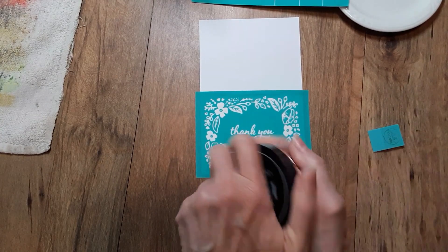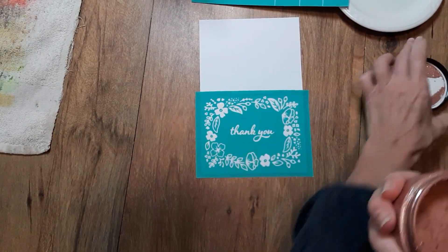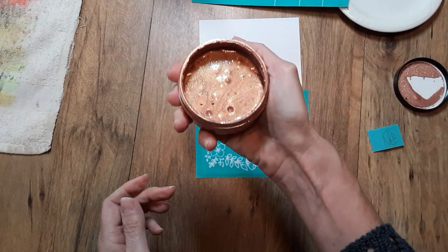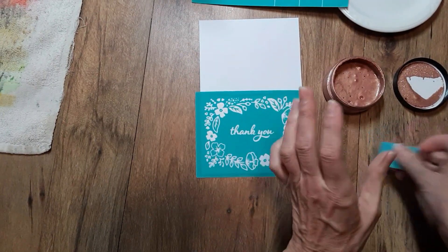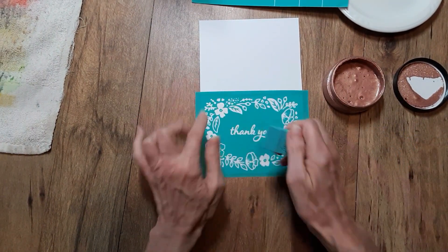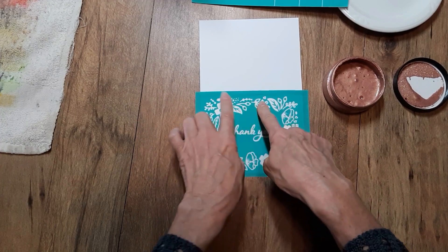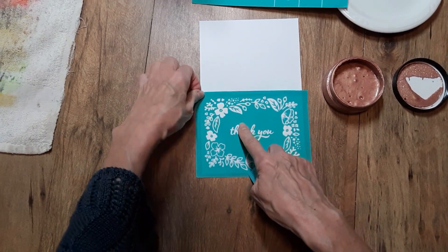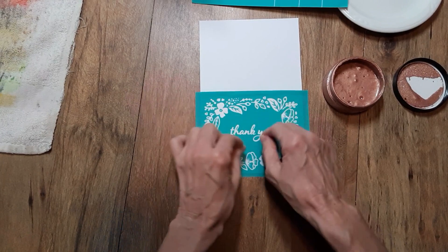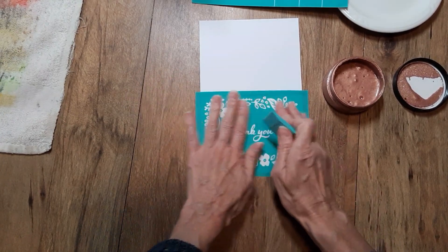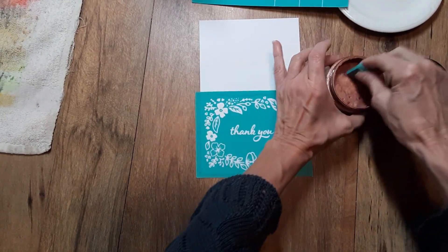And I've already pre-stirred my jar of paste. This is the Shimmer Rose Gold. Like I said, you could use whatever color you would like. You could get detailed. You could do different colors. But if you're going to do that, you're going to have to move fast and also do the peel and lift method. But if you want to do something really quick, one color is the way to go.